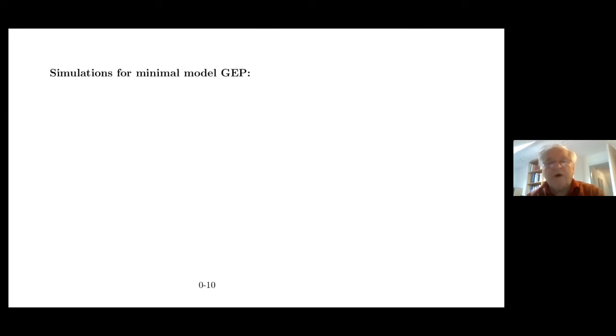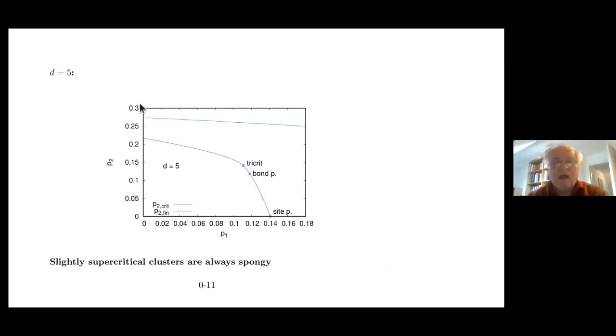So what about this general epidemic process? Here I have now for five dimensions a phase diagram. So p1 and p2, I said, I have two independent percolation probabilities, first attack, second attack and later ones. Site percolation has, the second one will never succeed. Bond percolation, tricritical point. This curve, the pink curve or the magenta curve, is just a critical curve. The green curve is the curve above which the clusters are completely compact. They have little holes, but they're not spongy. But in this vast region between the two curves you have this sponge phase.